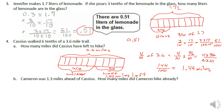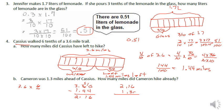Part b: Cameron was 1.3 miles ahead of Cassius. How many miles had Cassius already hiked? We already know he has 1.44 miles left, so 3.6 minus 1.44 equals 2.16 miles walked by Cassius. Since Cameron was 1.3 miles ahead, we add 2.16 plus 1.3, giving Cameron 3.46 miles already walked.